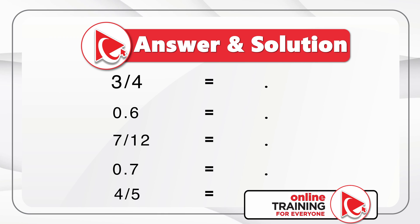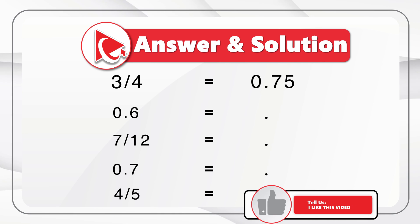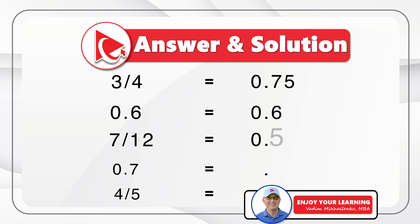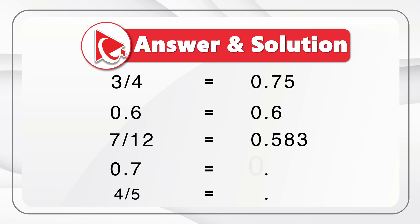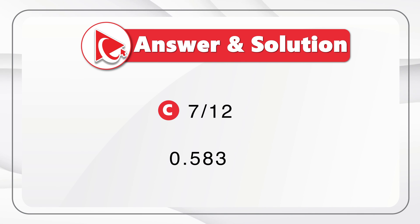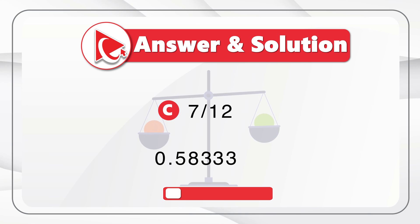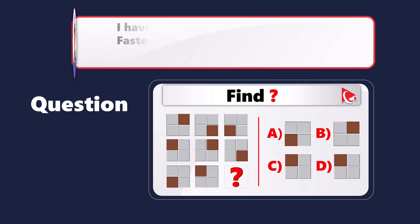3 fourths in decimal is 0.75. 0.6 is 0.6. And 7 twelfths is 0.583. 0.7 has the same value. And 4 fifths is 0.8. Now you can easily see that the smallest value is choice C, 7 twelfths, which is approximately 0.58333. Did you get to the similar solution? If not, please make sure to post your answer and solution in comments.